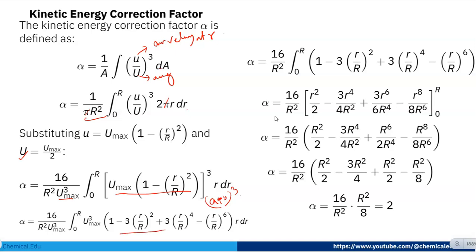After applying the (a − b)³ expansion and substituting, we put in the integration limits and integrate term by term. The u_max³ terms cancel out, and after performing the integration with the factor 16/R², simplifying step by step, we get α = 2. So the kinetic energy correction factor alpha equals 2.